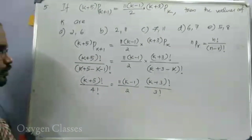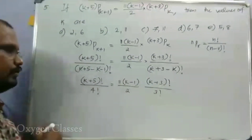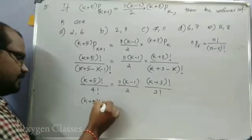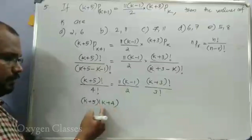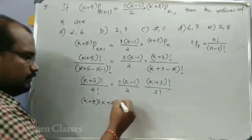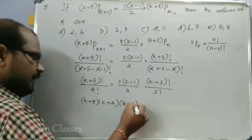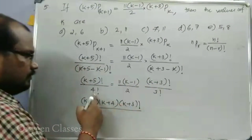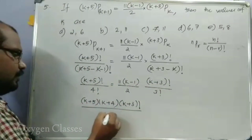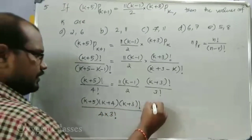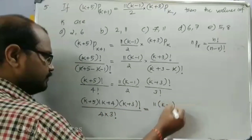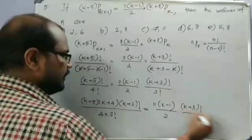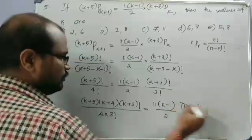Further simplification: k plus 5 factorial equals k plus 5 into k plus 4 factorial; k plus 4 factorial equals k plus 4 into k plus 3 factorial. This equals 11 into (k minus 1) by 2 into k plus 3 factorial divided by 3 factorial.